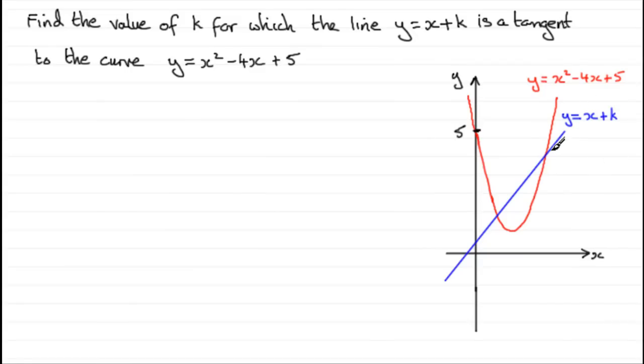Clearly you can see that this line is crossing the curve at two points of intersection. Now if it were a tangent, then this would happen.